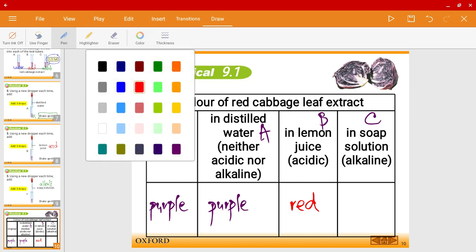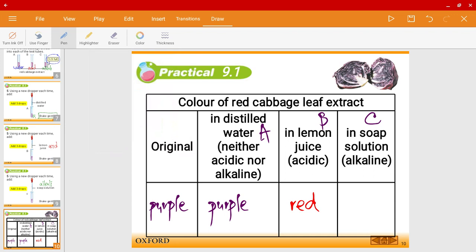And for the soap solution, it would turn green in color. Do you notice that in an acid solution, the color changes from purple to red, while in an alkaline solution, it changes from purple to green. You have a difference in color over here. So this difference in color allows us to indicate which one is an acid and which one is an alkaline.